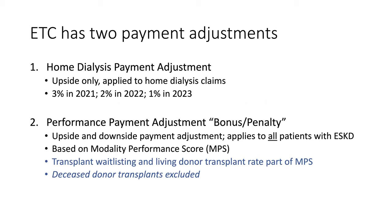ETC has two types of payment adjustments. First is the Home Dialysis Payment Adjustment — an upside-only adjustment applied to home dialysis claims only: a 3% increase in 2021, 2% in 2022, 1% in 2023, then phased out. Second is the Performance Payment Adjustment, which has either an upside bonus or downside penalty applied to all attributed ESRD patients based on the Modality Performance Score, or MPS. Transplant wait-listing and living donor transplant rates are part of the MPS, whereas deceased donor transplants are explicitly excluded.